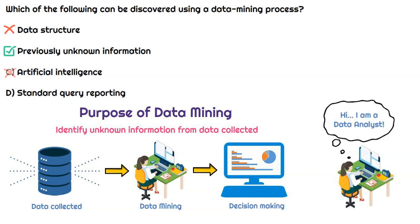Lastly, we have standard query reporting. Standard query reporting is simple — a company has a system, and when they run a standard query, they're just requesting data from the stored system. For example, running sales transactions for last year would return a report with all those transactions. There's no real analysis being done; it's just a request for data. That's why that option is incorrect.